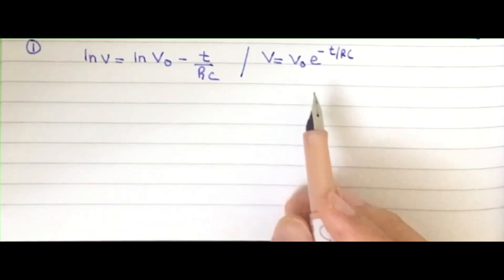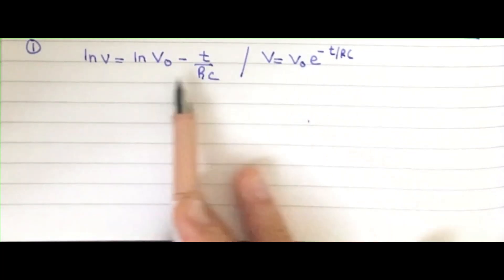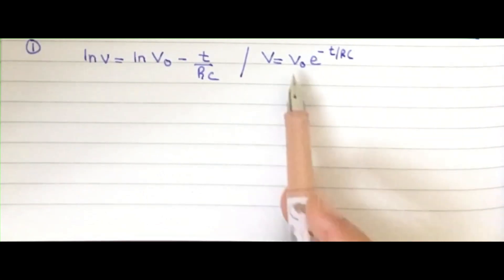Either way you're going to get the same thing. If you're calculating by hand without a calculator, you have to convert this to the natural log form for easier calculation. You can use either of them, it doesn't matter. I'm going to use this.